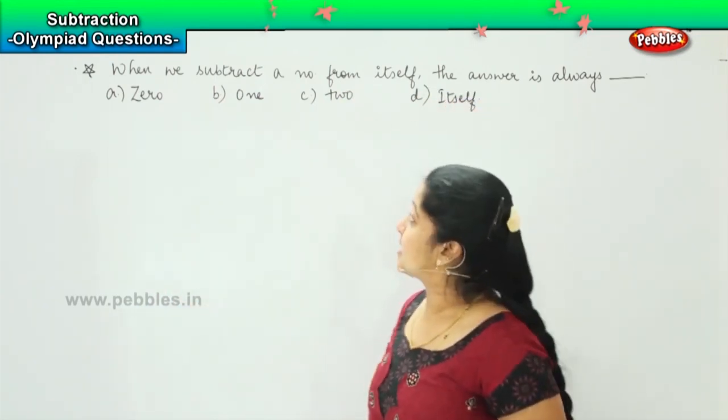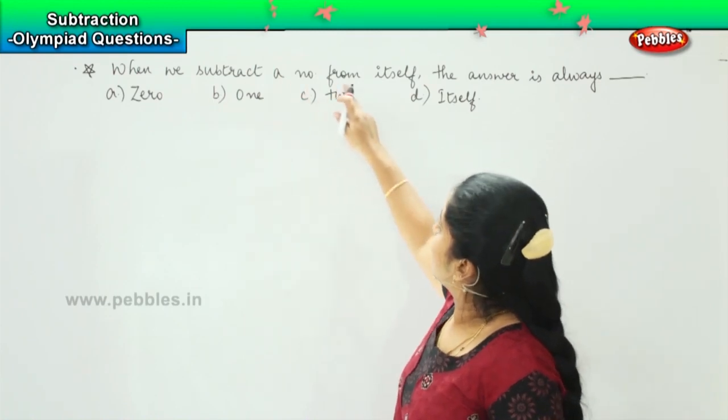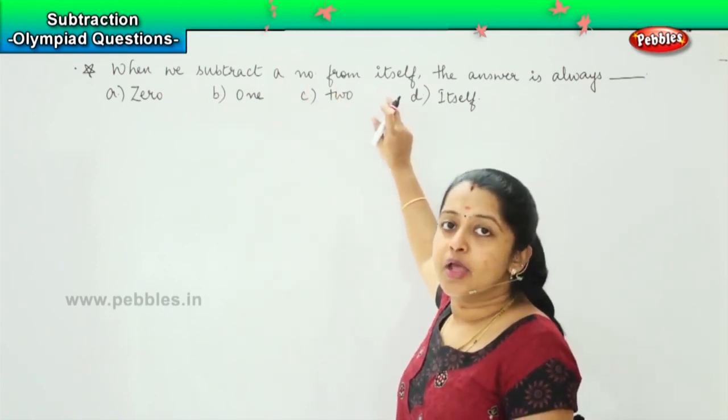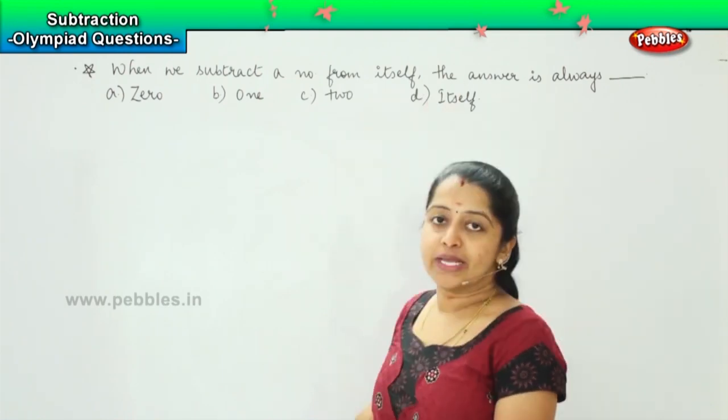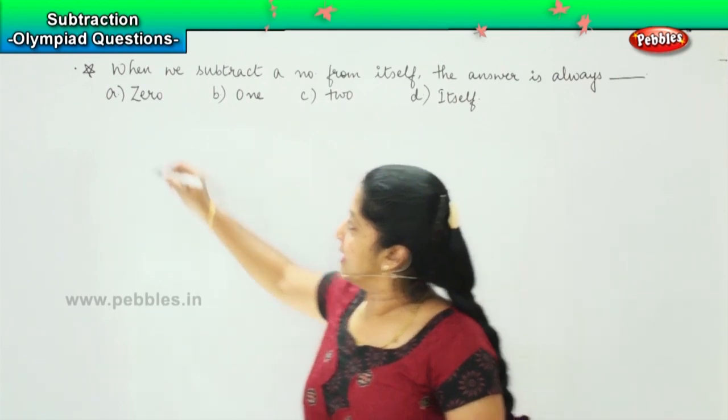So the question is asking us, when we subtract a number from itself, which means when I subtract a number from the number itself, the answer is always, very good, it is 0.